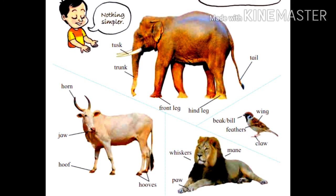Nothing simpler. I can turn it in 360 degrees. Horn, sing, the jabra (hoop), khur, hooz, khura. Then whiskers (Misha).